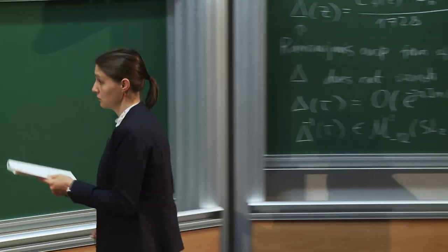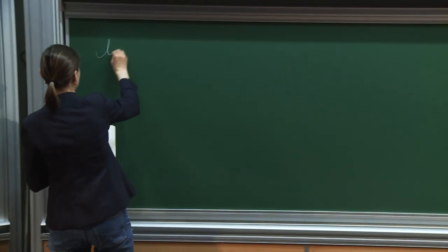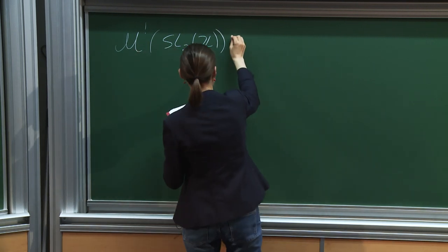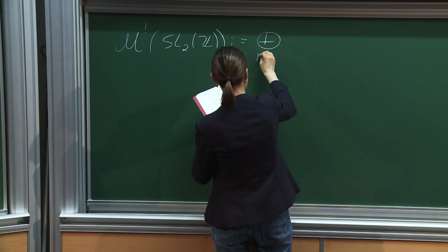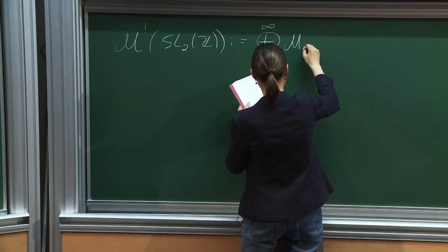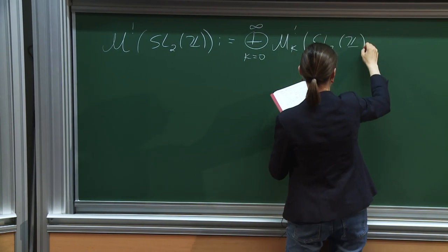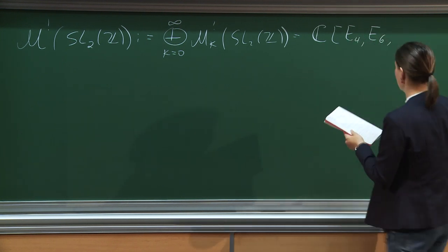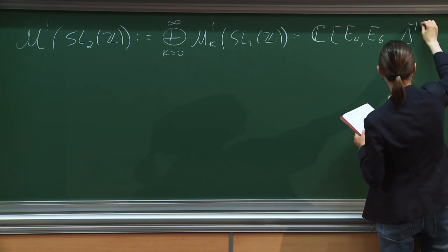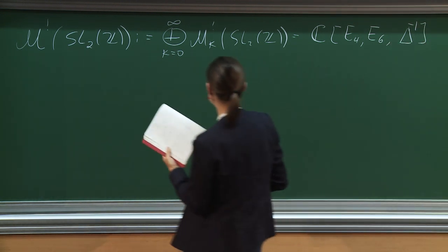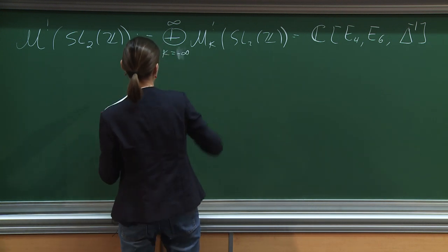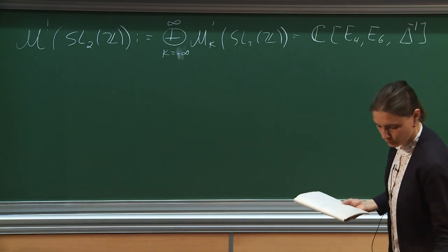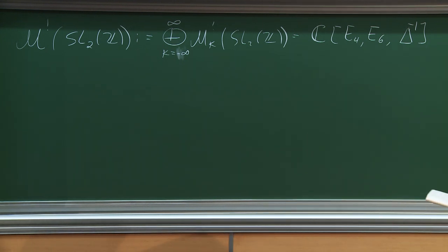A nice fact about the ring of weakly holomorphic modular forms is that it is generated by the usual modular forms together with one more function — the inverse of delta. Now when it comes to SL2Z there is another class of objects we will need.